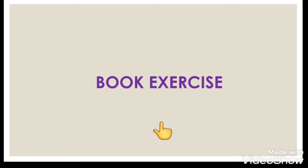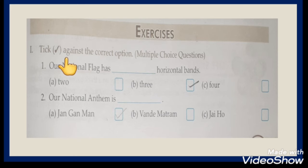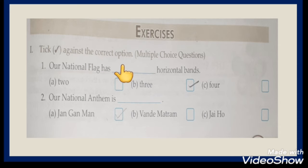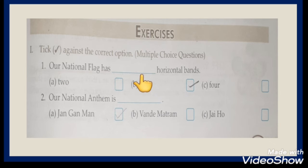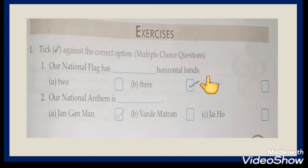First we will discuss the book exercise. The first exercise is: tick right against the correct option. Three options are given and we have to choose one of them. First: our national flag has how many horizontal bands? Our national flag has three horizontal bands.